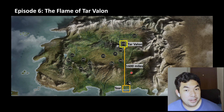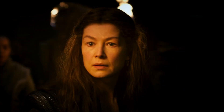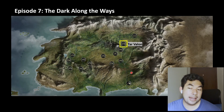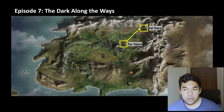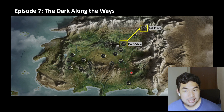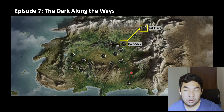On to episode seven, 'The Dark Along the Ways.' The start of this episode is within the Ways — so that's not on the map — but they get to Fal Dara, which is all the way to the north. Judging from the distance, this seems to be about a thousand miles apart, so the one night within the Ways saved them about a month's journey.